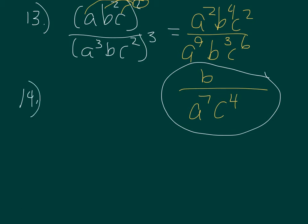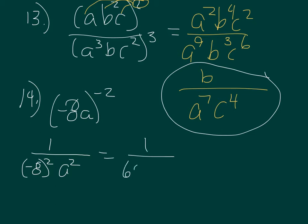14. This one's easy. Negative 8a to the negative 2. Negative 8 to the negative 2 power is 1 over negative 8 squared. a to the negative 2 power is 1 over a squared. So this is going to be 1 over 64a squared as my answer.